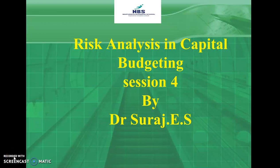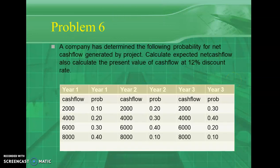Hi, good morning. Let's continue with session number 4: Risk Analysis in Capital Budgeting. A company has determined the following probability for net cash flow generated by a project. Calculate expected net cash flow and calculate the present value of cash flow at 12% discount rate. This is a typical question which wants to determine the net cash inflow.